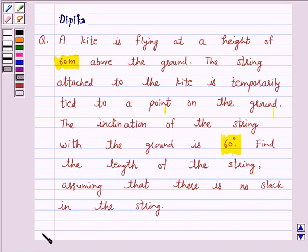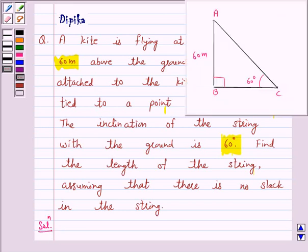So let's start the solution. We will first draw a simple diagram to represent our given problem. Here, let AC represent the length of string of a kite which is flying at a height of 60 meters above the ground.